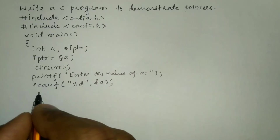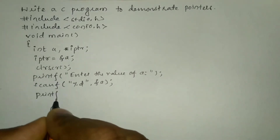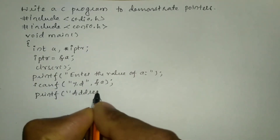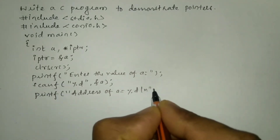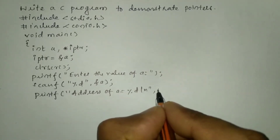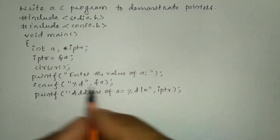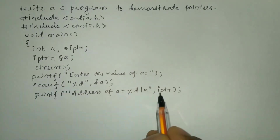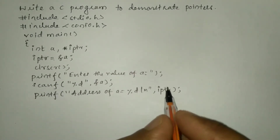Now let us print both the address as well as the value stored in the address using printf statements. I am going to write printf, in double quotation marks: address of a is equal to %d, backward slash n, then put comma. In order to print the address I simply write IPTR and close the bracket and put semicolon. Because IPTR is equated with the address of the variable, simply writing IPTR returns the address of that particular memory location.